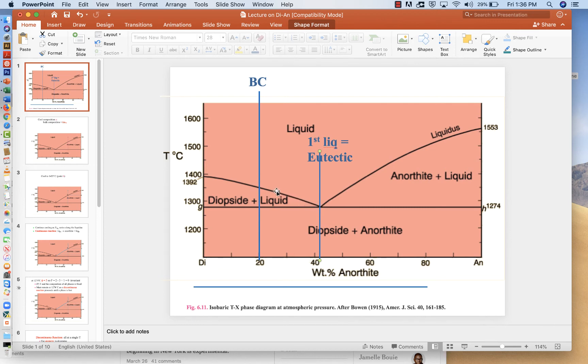It'll make its way up this curve until it hits the bulk composition. Once the liquid equals the bulk composition, then by definition, we're done melting. It means that we've melted the system entirely. There's no diopside left. And any further heating will just cause the system to get hotter.